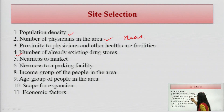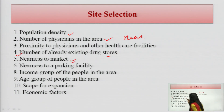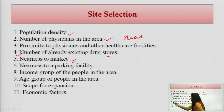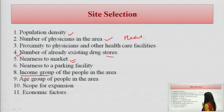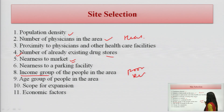Number of already existing drug stores means how much competition is there. Nearness to the market — is it near to the market, is there parking facility, how is the traffic. What is the income group in that area — whether the people's demography is poor, rich, or middle class.